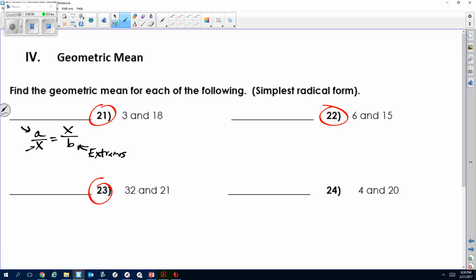If I'm going to set it up using the proportion, basically I do my 3 over x equals x over 18. And then we cross multiply. This would be x squared equals 3 times 18, which gives me 54.